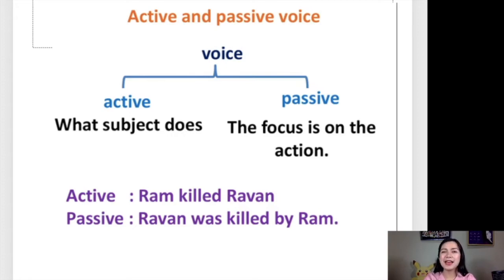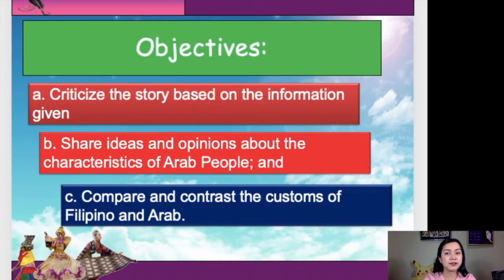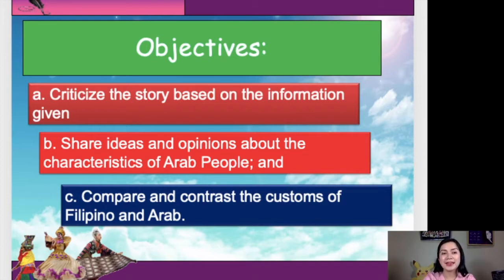Now, let us have our objectives for today. Could you please read, Stephen? Objectives. Letter A: Criticize the story based on the information given. Letter B: Share ideas and opinions about the characteristics of Arab people. And compare and contrast the customs of Filipino and Arab.